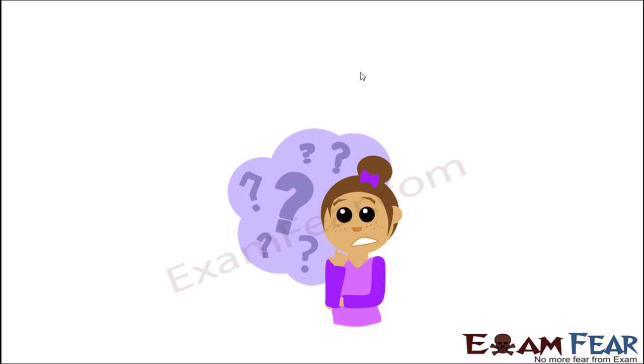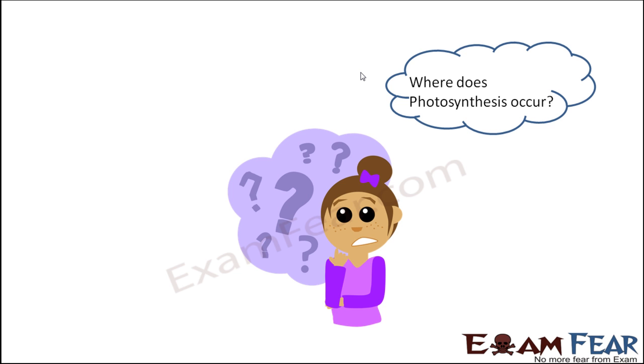So now the question is, where does photosynthesis occur? As was observed from early experiments, photosynthesis should occur in the green parts of the plant. Because chlorophyll plays an important role and chlorophyll is present only in the green parts of the plant. We will try to understand where exactly in the chloroplast, chloroplast was the cell organelle which contained chlorophyll. We will try to understand the structure of chloroplast and we will see where exactly different steps of photosynthesis take place.